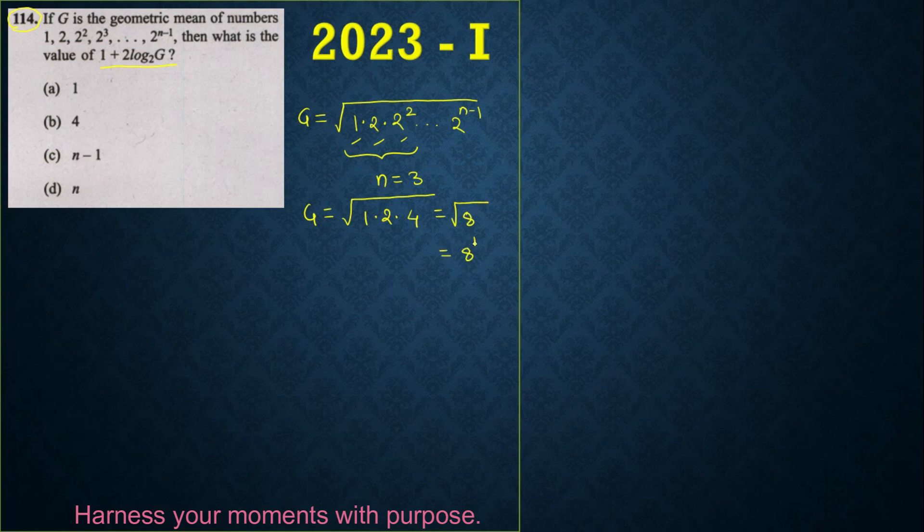Now our g becomes 8 to the power 1 by 2. Now let's find out the value of 1 plus 2 log of g base 2. And our value of g is 8 to the power 1 by 2.